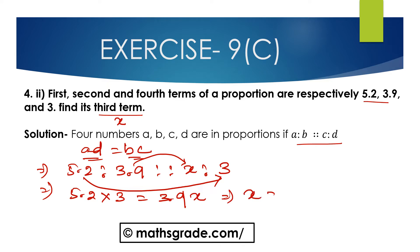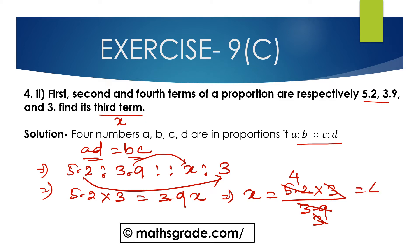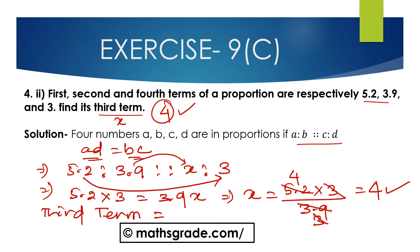Now x equals 5.2 multiplied by 3 divided by 3.9. Cancelling 5.2 and 3.9 with common factor 1.3: 1.3 times 4 is 5.2 and 1.3 times 3 is 3.9. After cancellation, x equals 4 times 1, which gives the third term equal to 4.3.